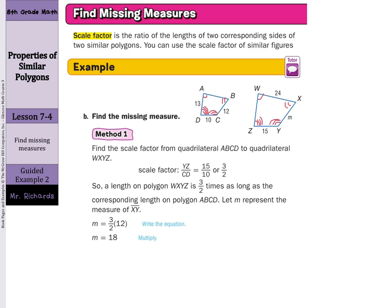When it comes time to find the missing measure, we are going to find the scale factor from quadrilateral ABCD to quadrilateral WXYZ. The way we are going to do that is to compare YZ, which was 15, to CD, which is 10, which becomes 3 halves. So a length on polygon WXYZ is 3 halves times as long as the corresponding length on polygon ABCD. Let M represent the measure of segment XY. We take 3 halves times 12 to get our M, and that is 18.